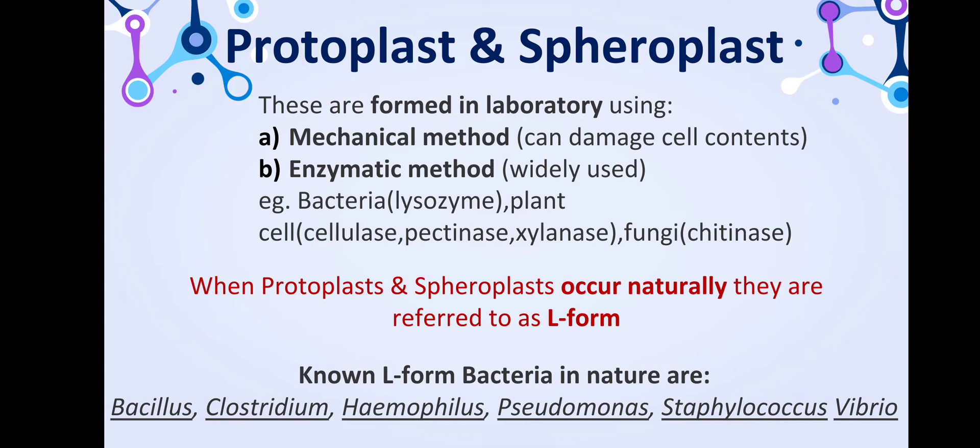An important point is that when protoplasts and spheroplasts occur naturally, they are referred to as L-forms. Known L-form bacteria found in nature include Bacillus, Clostridium, Haemophilus, Pseudomonas, Staphylococcus, and Vibrio.